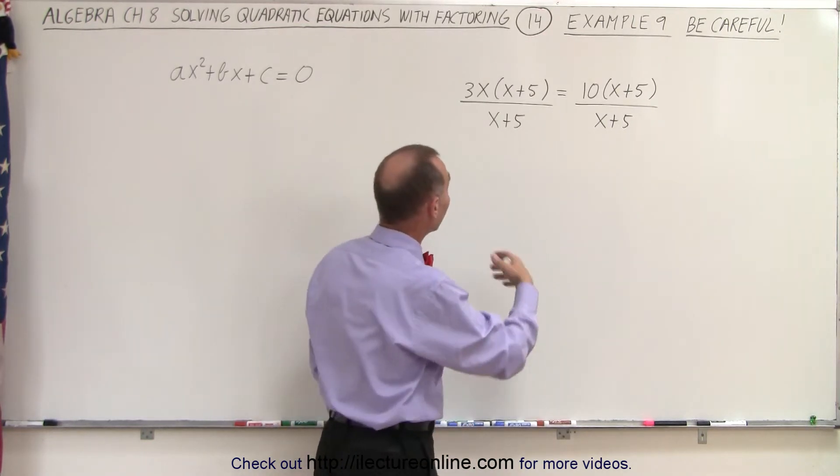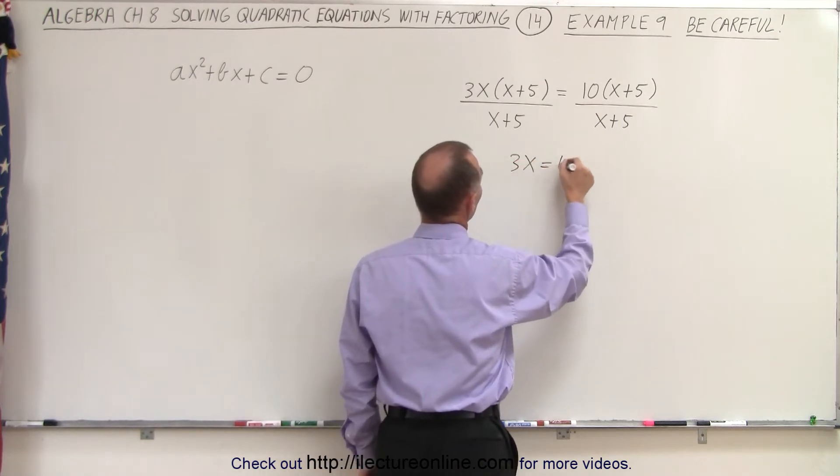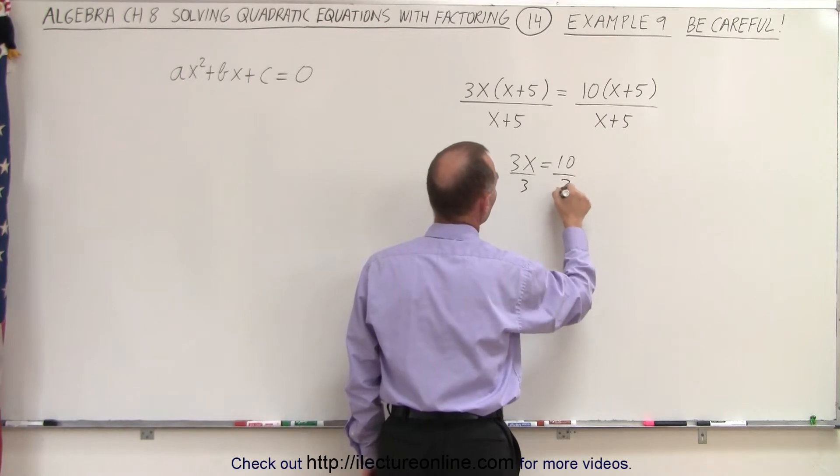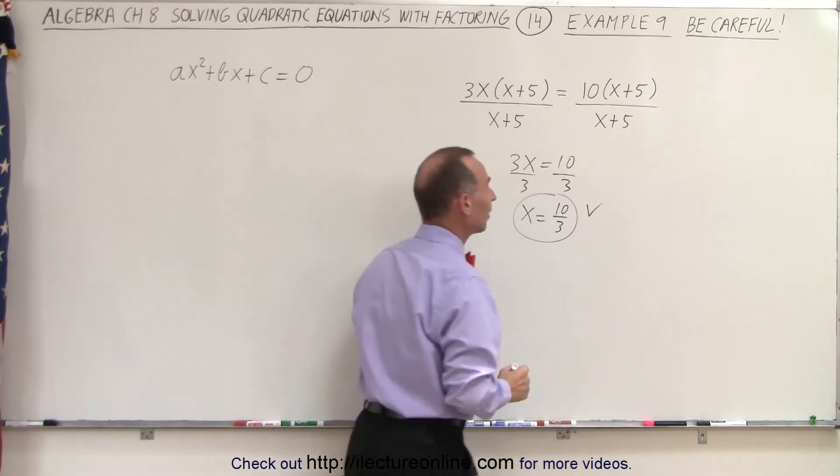Well if I do that I get the following. I get 3x is equal to 10 which means that if I then divide both sides by 3 I get x equals 10 thirds. And there we go. Is that correct?